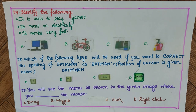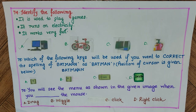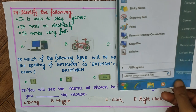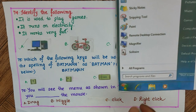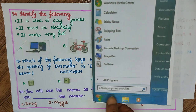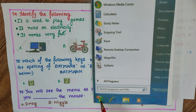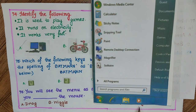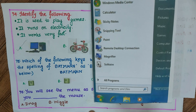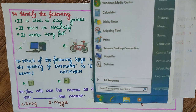Question 76: When will you see the start menu shown in the given image? The image shows the start button. Options: A) drag, B) wiggle, C) click, D) right click. We see this menu when we left-click on the start button. The answer is C) click.